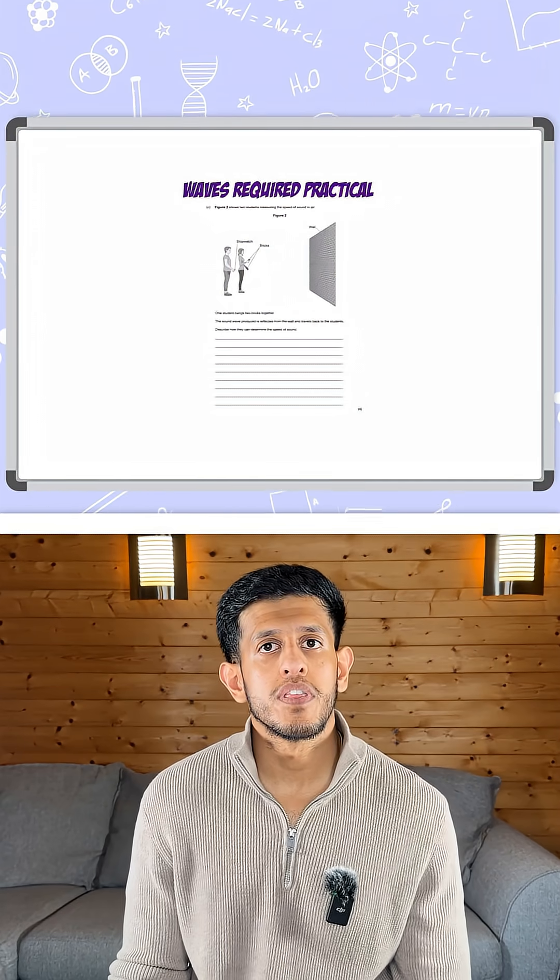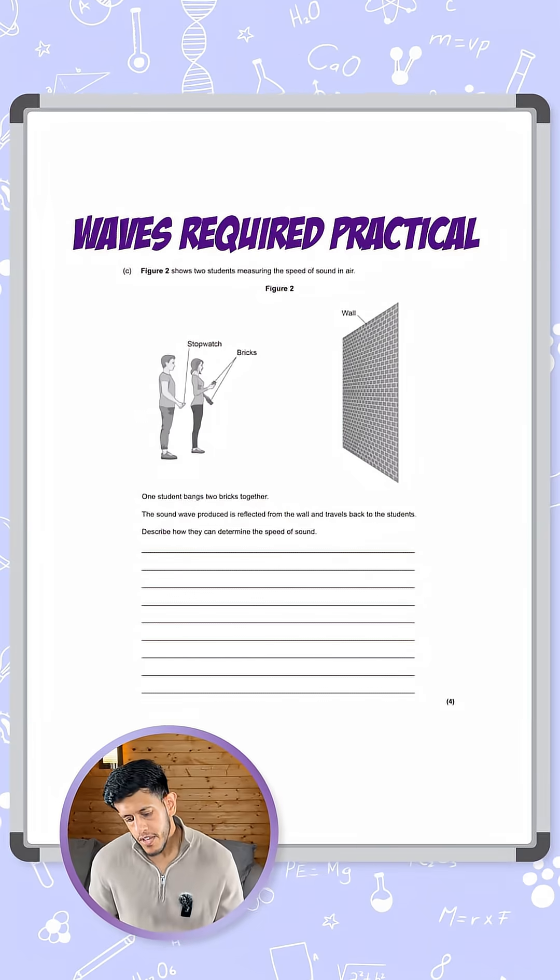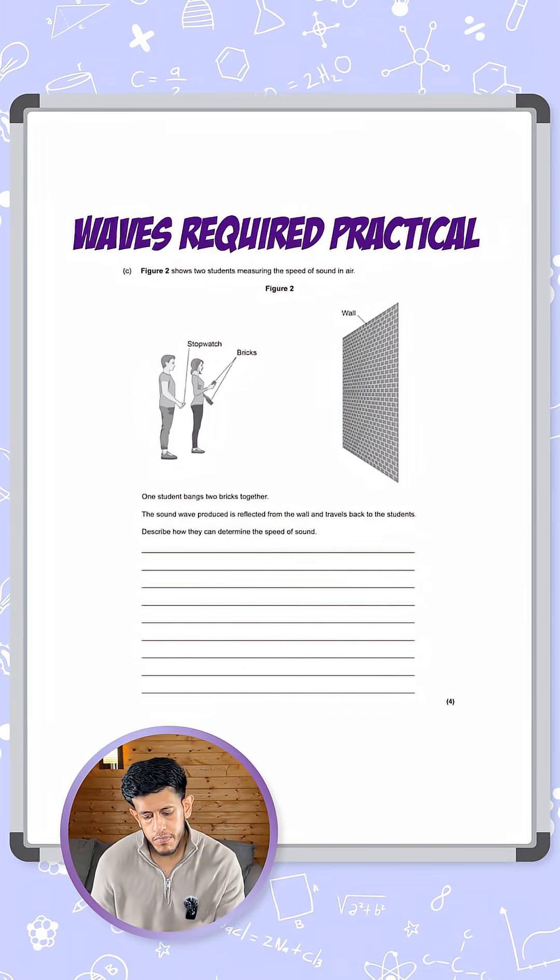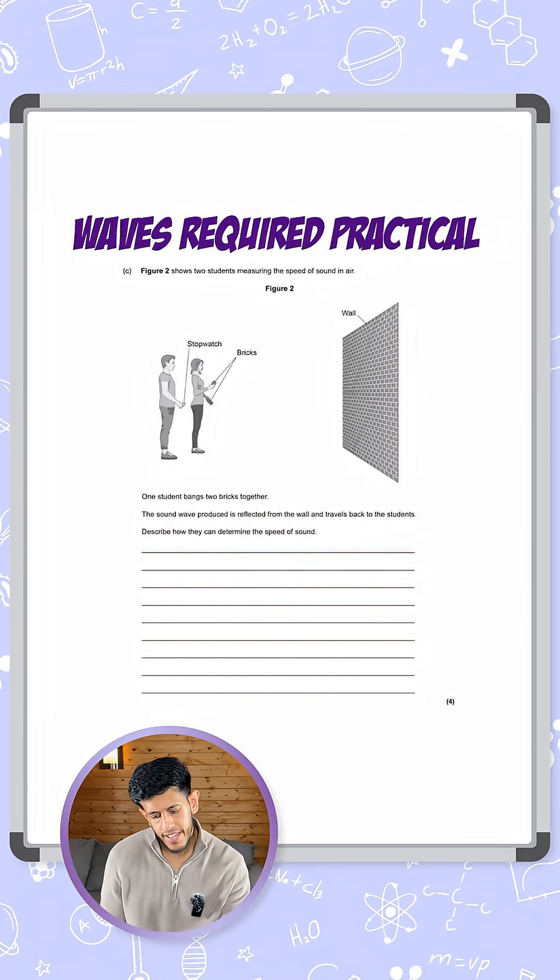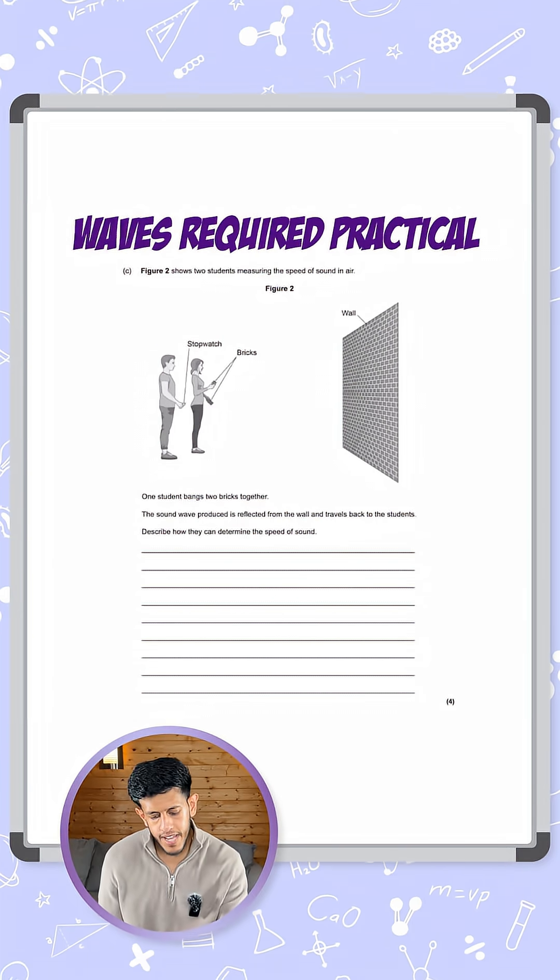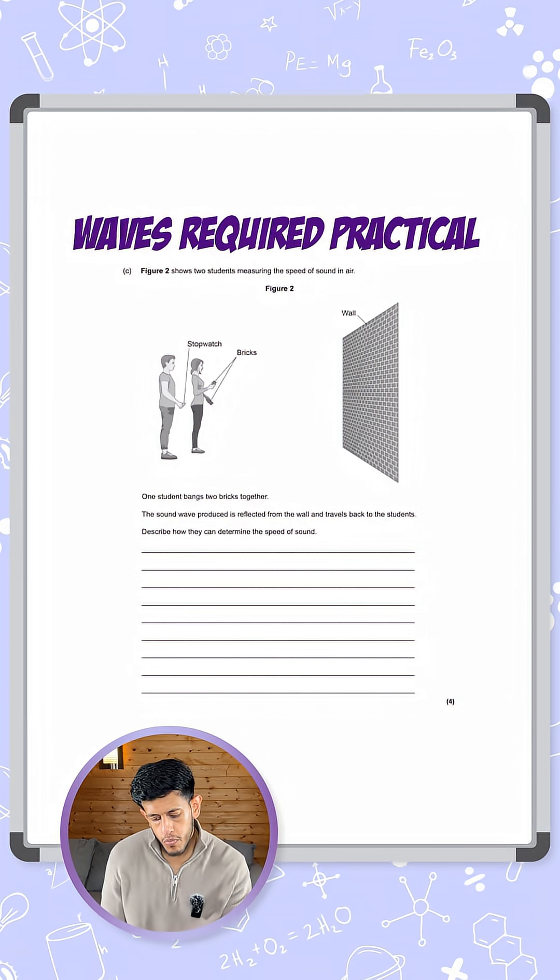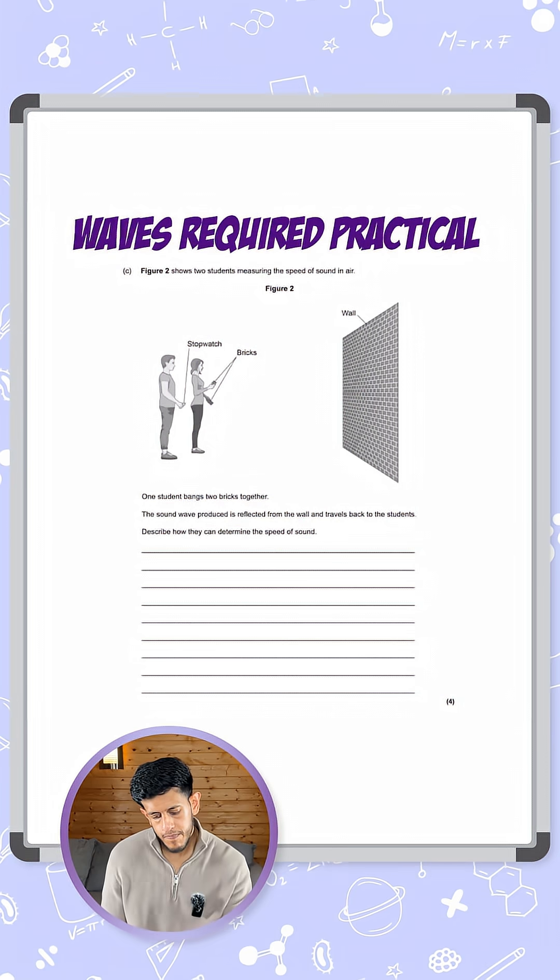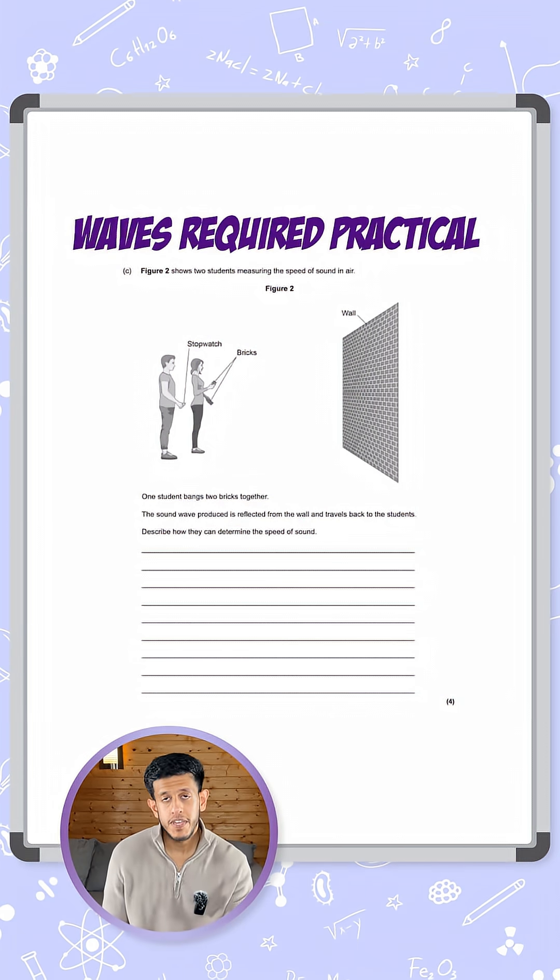Okay, so let's take a look at this question going through one of the required practicals for waves. Figure 2 shows students measuring the speed of sound in air. One student bangs the two bricks together, the sound wave is produced, travels to the wall and back to the students. Describe how they can determine the speed of sound.